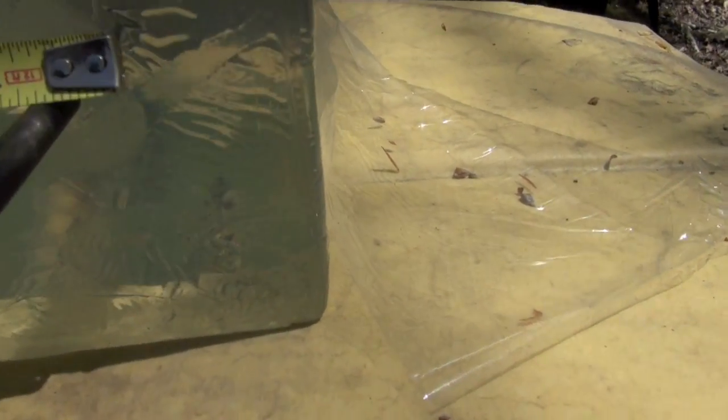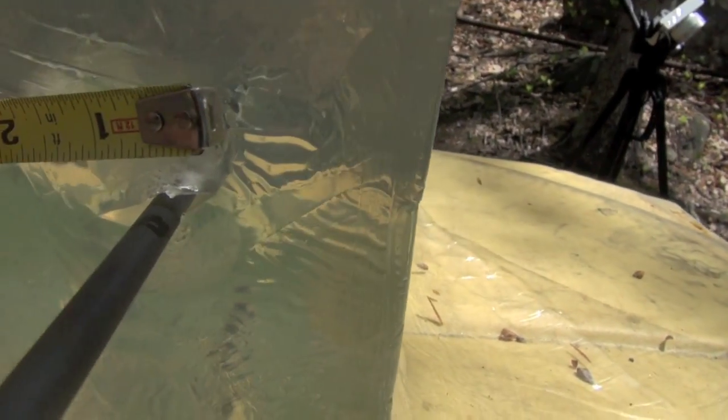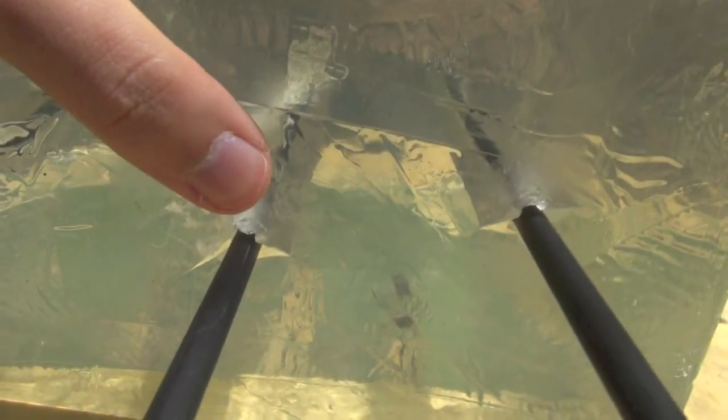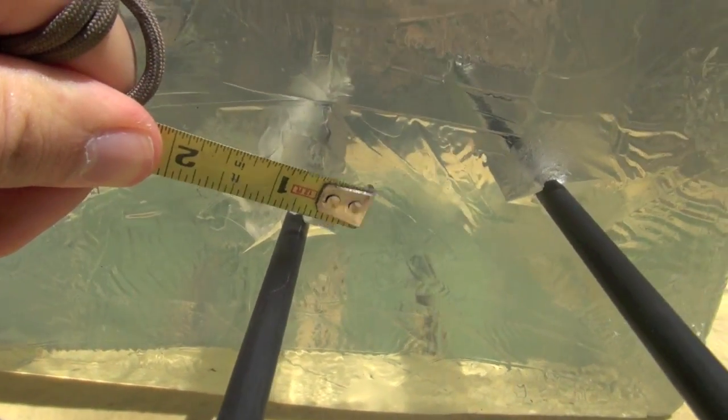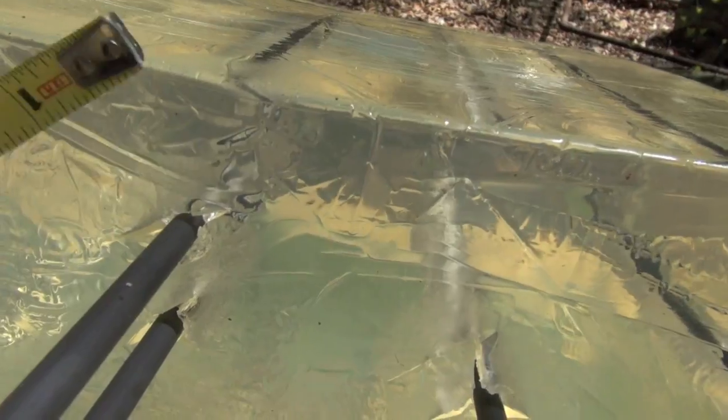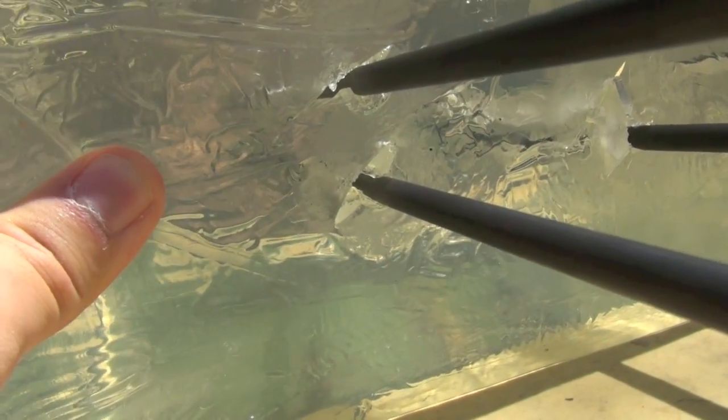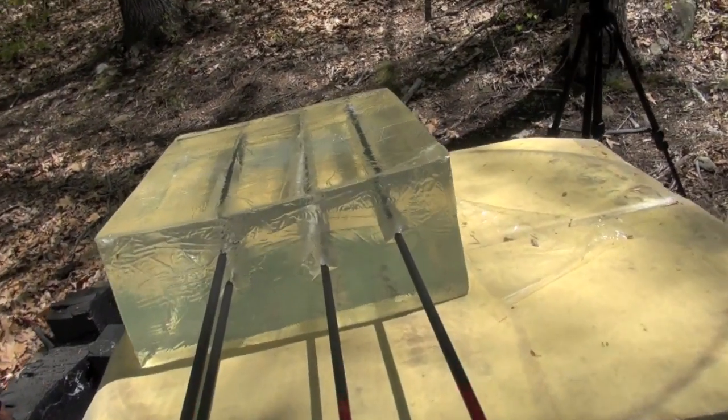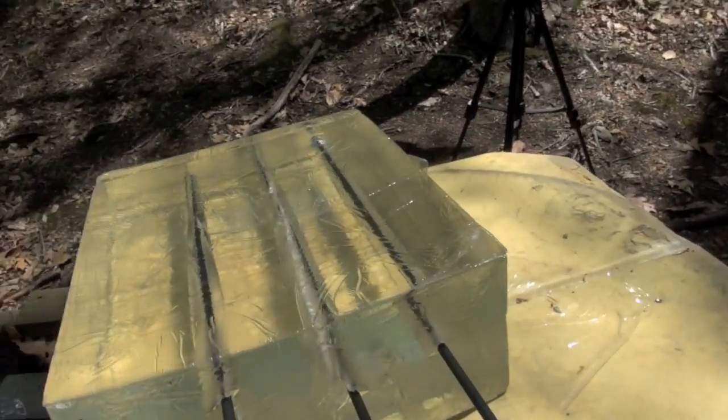Okay, so now we're going to look at the entrance holes. So here's the Landshark entrance wound. QAD Exodus. Here's the Helix. And then there's the Slick Trick right there. Basically, they're all like the same size as the broadhead's cutting diameter.